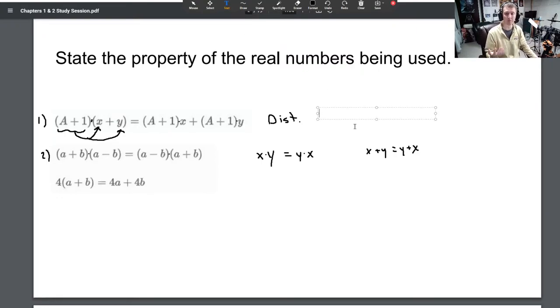How about this one? Number two, we've got (a+b) times (a-b) equals (a-b) times (a+b). What's the name of the property that says x times y is the same as y times x? It says that you can switch the order of multiplication. It's the same as x plus y equals y plus x, the same name. What do we call that property? Commutative. Commutative.